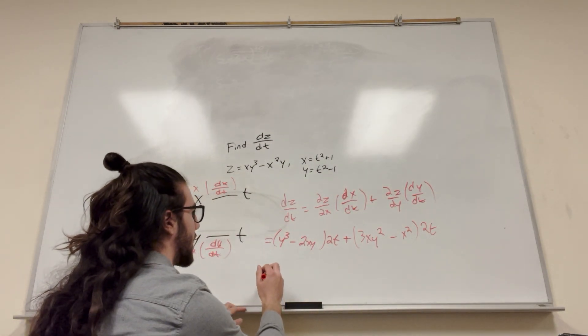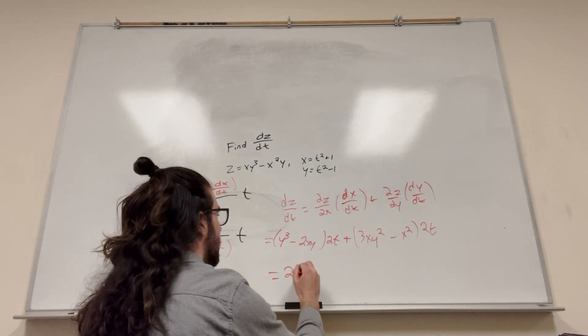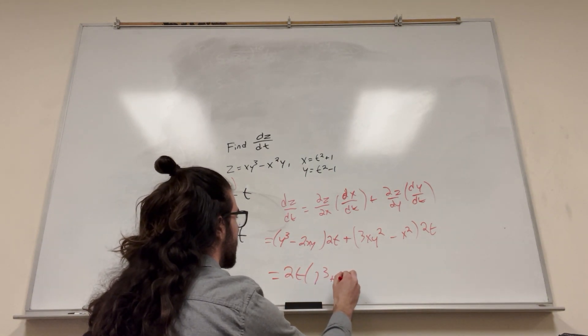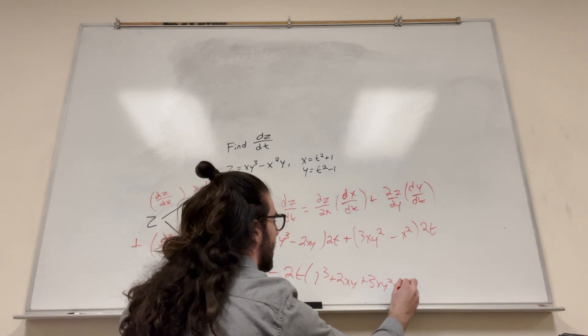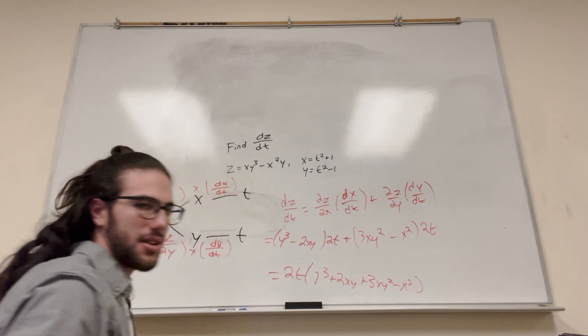And I'm pretty sure the textbook does something like this. It brings out the 2t's. And then it has y to the third plus 2xy plus 3xy squared minus x squared. And that's what it gives you as your final answer.